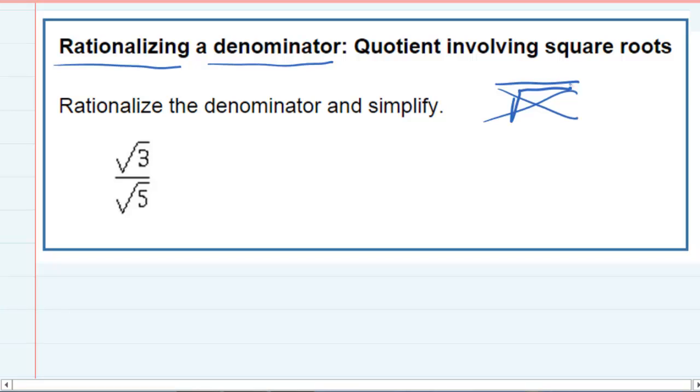So for this one we have the square root of 3 over the square root of 5. The square root of 3 is not a problem because it's in the top, but the square root of 5, that is a problem because we're not supposed to have radicals in the denominator.